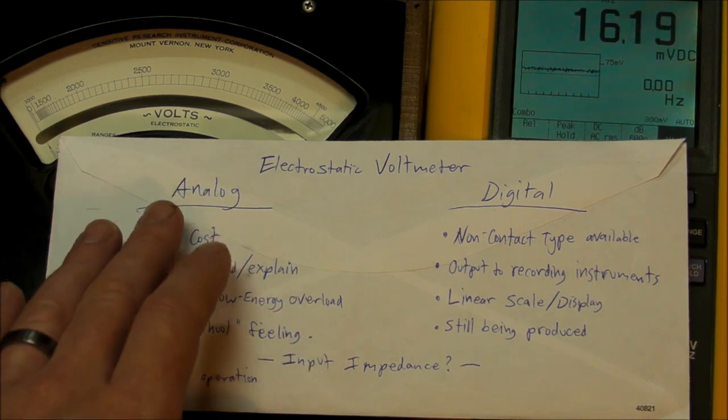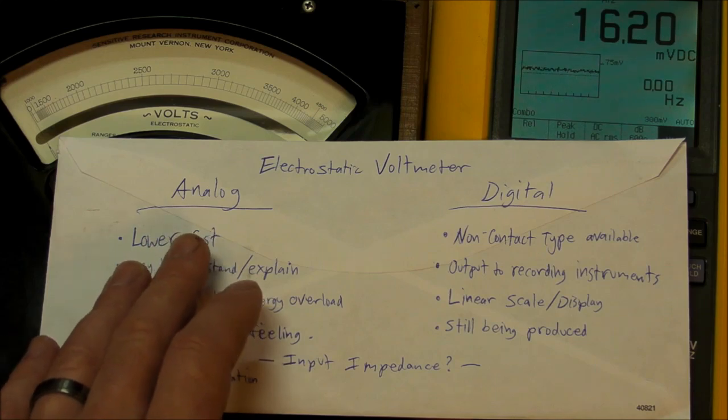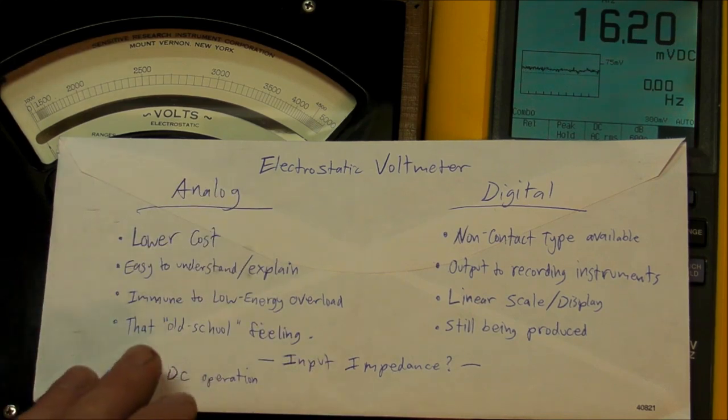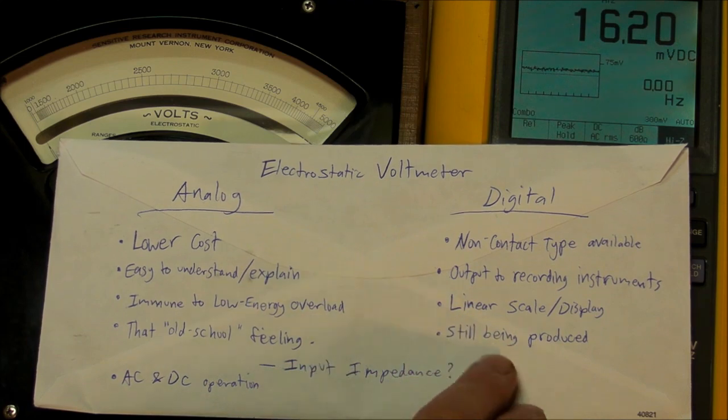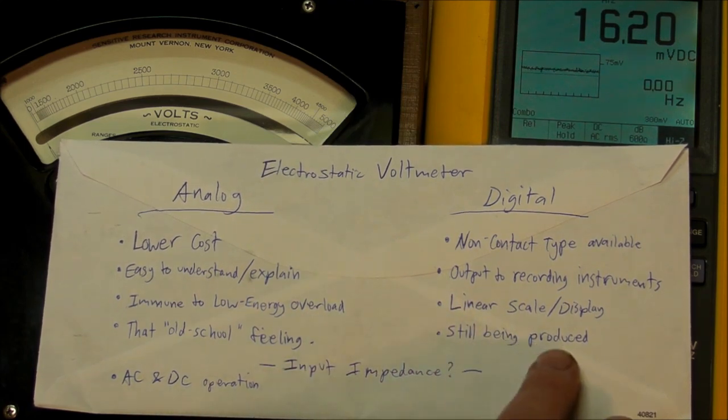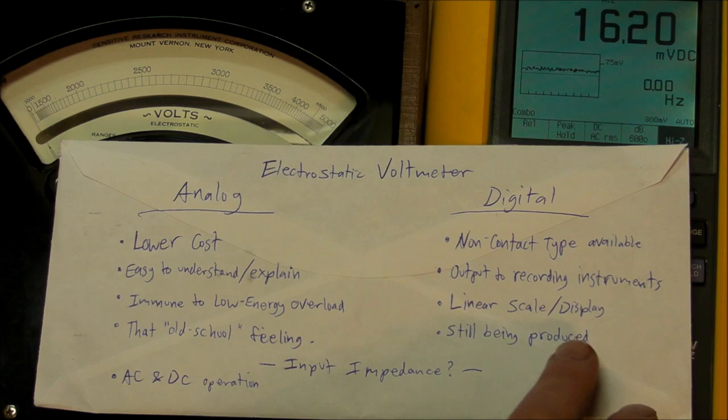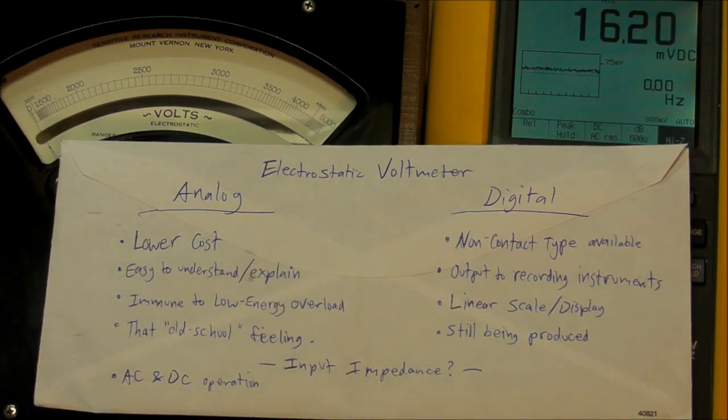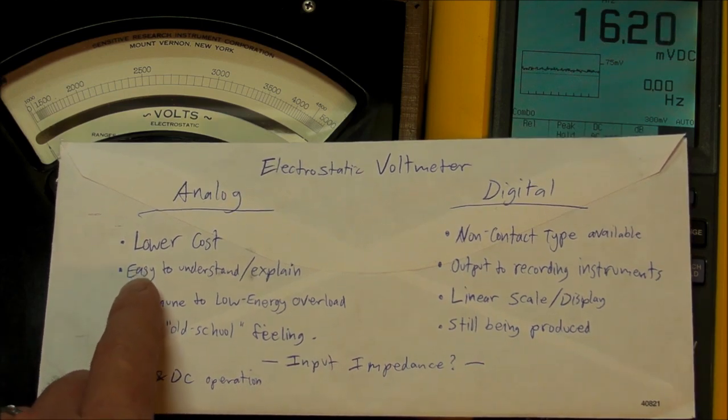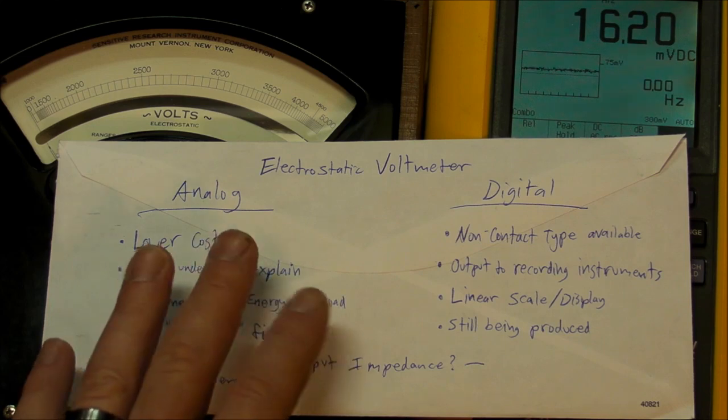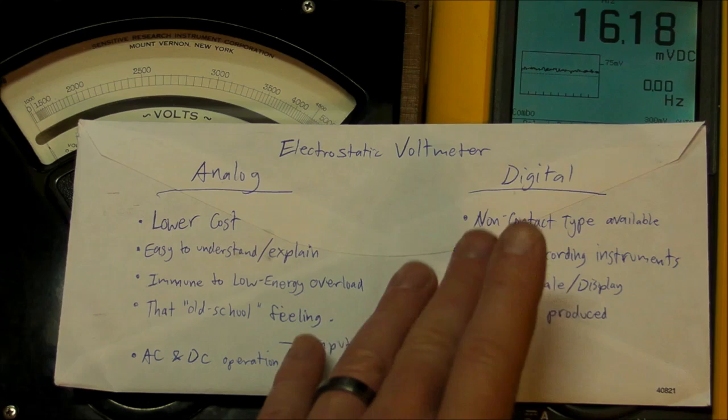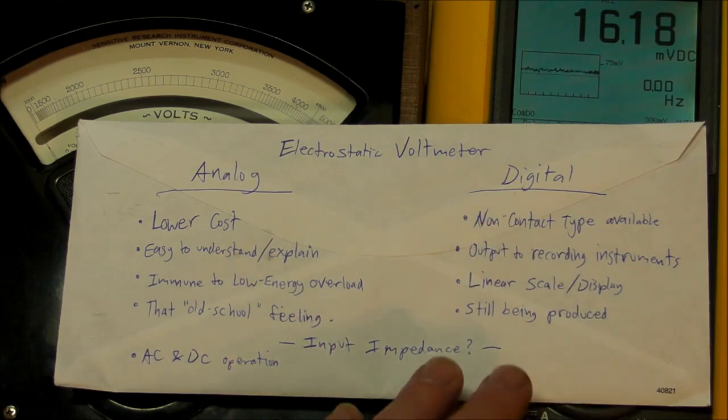First of all, analog, lower cost in most cases, much lower costs. I found that these are only available on eBay, apparently they're not making these anymore, nobody's making them. Maybe some physics classroom company might be making some electrostatic voltmeters just for educational purposes, I couldn't find any.